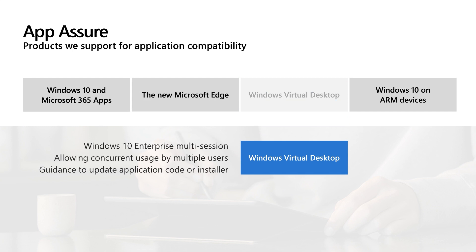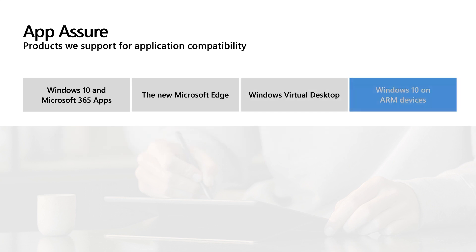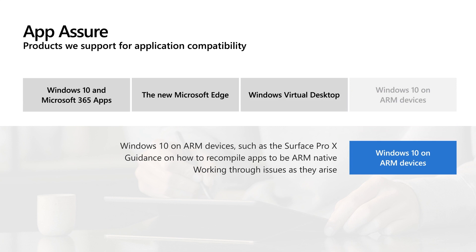Windows 10 Enterprise multi-session enables multiple concurrent interactive sessions and is supported exclusively in Windows Virtual Desktop, also known as WVD. Customers have faced issues moving applications currently hosted in an on-premises remote desktop session environment to Windows 10 multi-session in WVD because they are hard-coded to work only on server OS. To resolve this, App Assure engineers provide guidance for either updating the application code or updating the installer to get the application working on WVD. For customers deploying Windows 10 on ARM devices such as the Surface Pro X, we now offer a new compatibility promise. The ARM architecture enables PCs to have additional benefits such as all-day battery life and built-in LTE cellular connectivity. Our engineers provide guidance on how to recompile apps to be ARM native and help debug issues as they arise.